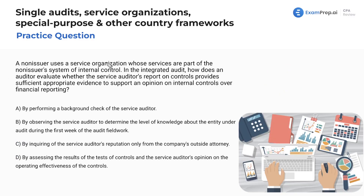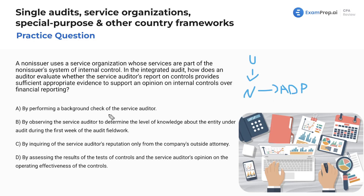Next question: a non-issuer uses a service organization whose services are part of the non-issuer's system of internal control. We're the user auditor, auditing a non-issuer that uses ADP as part of its internal control in an integrated audit. How does an auditor evaluate whether the service auditor's report on controls provides sufficient appropriate evidence to support an opinion on internal control over financial reporting?